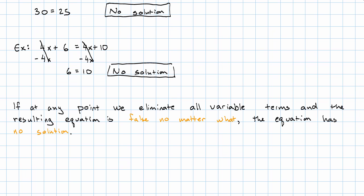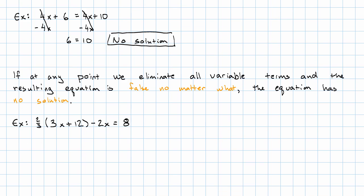What if we eliminate all the variable terms and the resulting equation is true? So let's say we had this equation: 2 thirds of 3x plus 12 minus 2x equals 8.